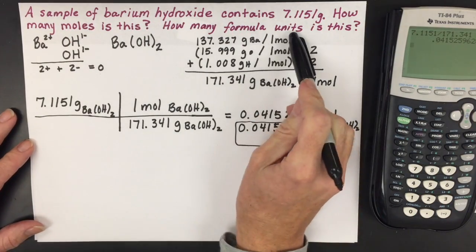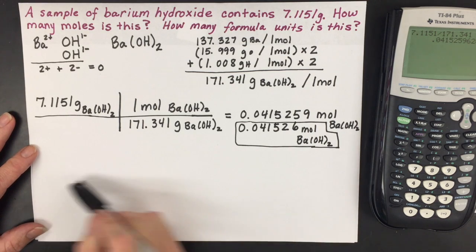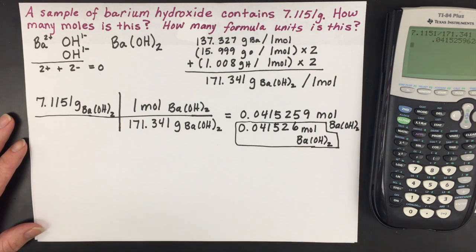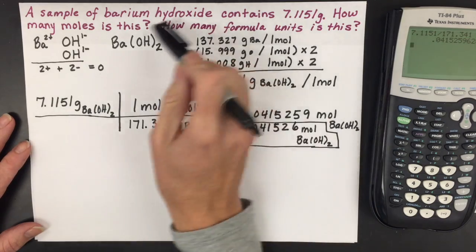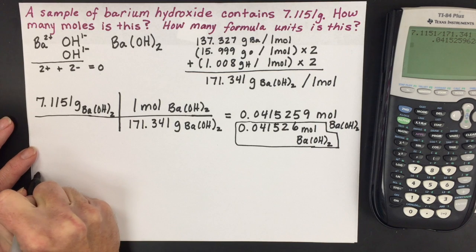The next step is converting to formula units. At this point, you have two choices. You could use this answer and just convert it, but what I'm going to do is start the problem all over, just in case maybe the question doesn't include the mole amount. So to do that correctly, you have to start with your mass.